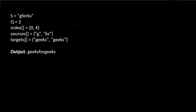Going through the problem, some key observations: first, we have to confirm if there is equality of the string — only then do we do the replacement. One important thing to observe: the length of the source word and the target word may not be the same. For example, source is 'g' but we replace it with 'geeks' — the lengths differ. So we need to keep track of that length difference because it's going to affect our actual string.